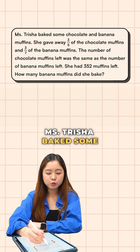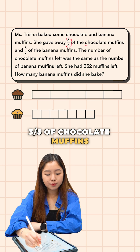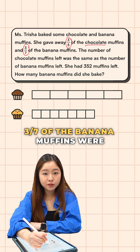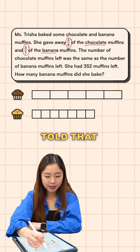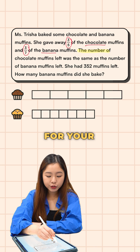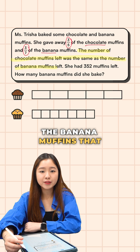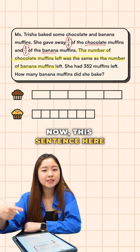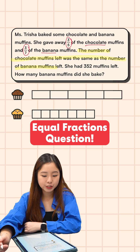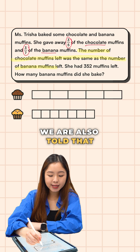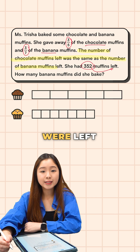Miss Trisha baked some chocolate and banana muffins. We are told that three-fifths of the chocolate muffins and three-sevenths of the banana muffins were given away. We are also told that what was left for the chocolate muffins is the same as the banana muffins that were left. This key sentence helps us identify this as an equal fractions question. Finally, we are told that 352 muffins were left.